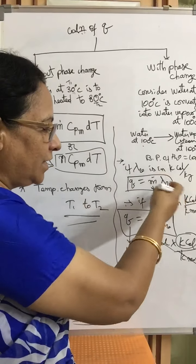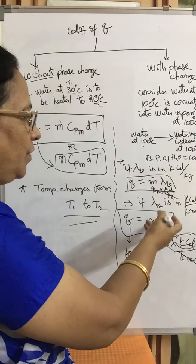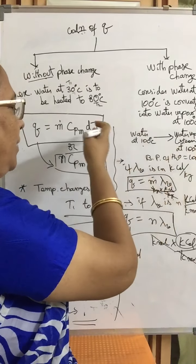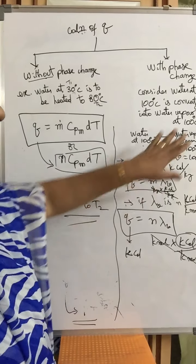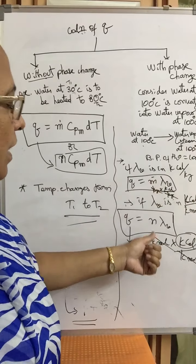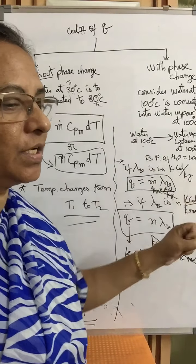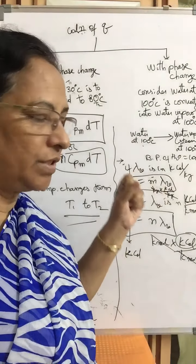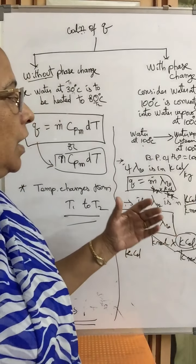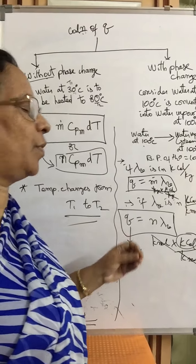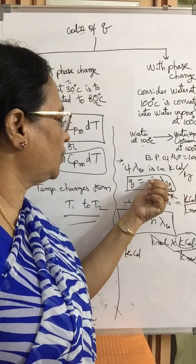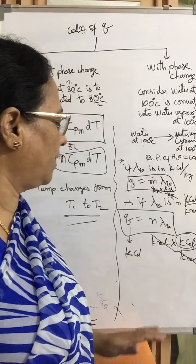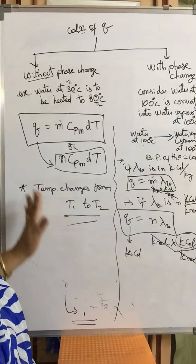Because temperature is constant here, it is not coming into the calculation. Q = N-dot · λV or N · λV. How much heat energy needs to be supplied or removed during phase change depends upon the latent heat. We will discuss problems with phase change after two to three classes.